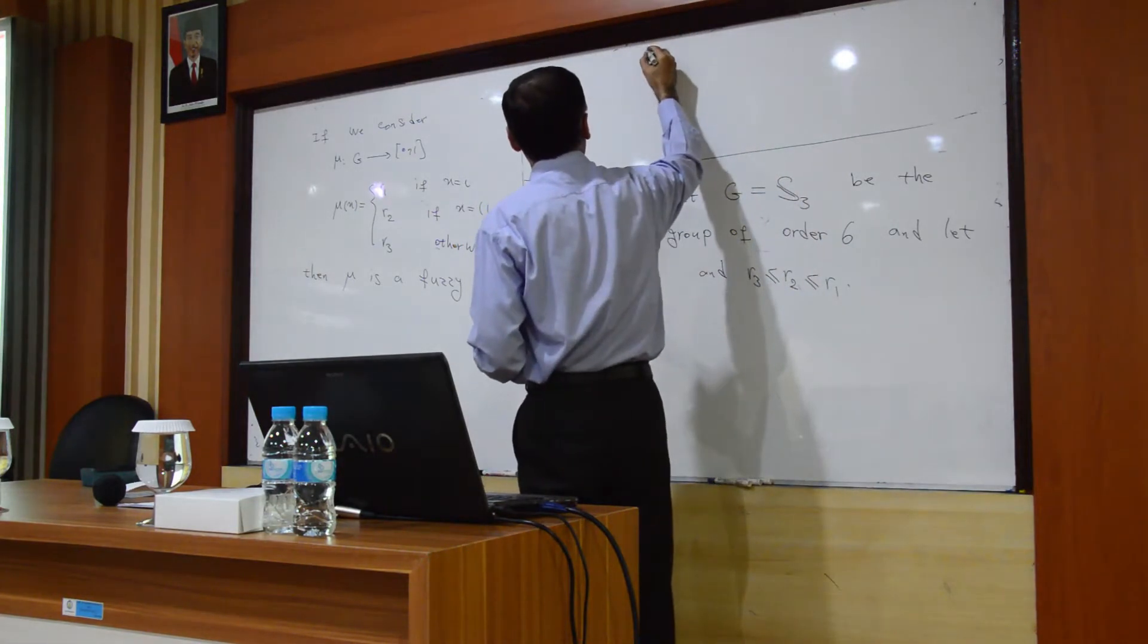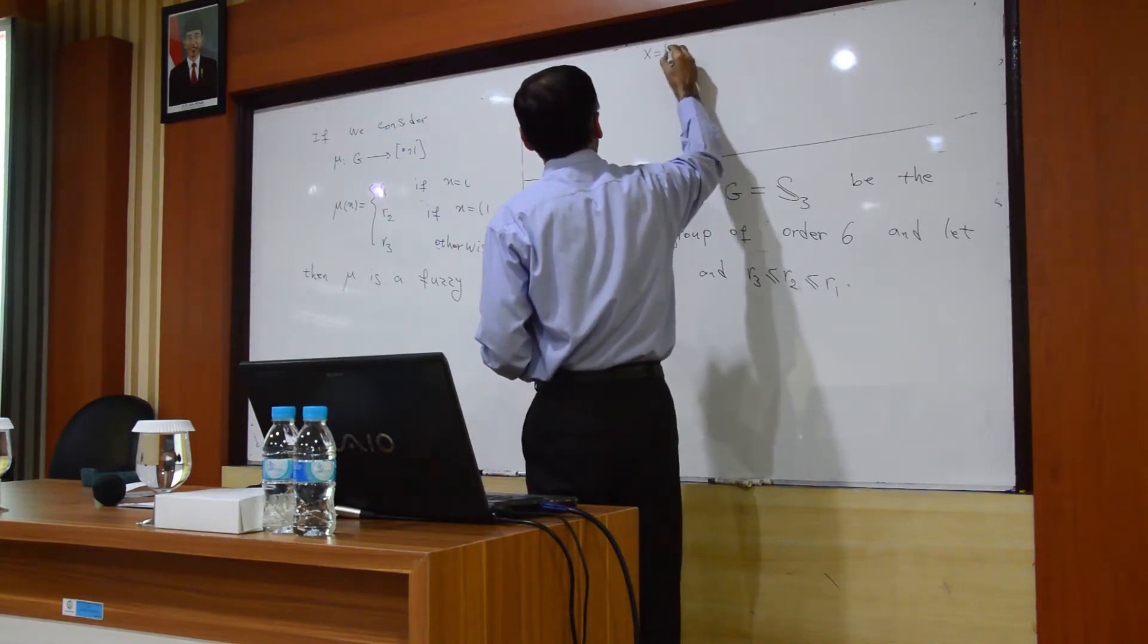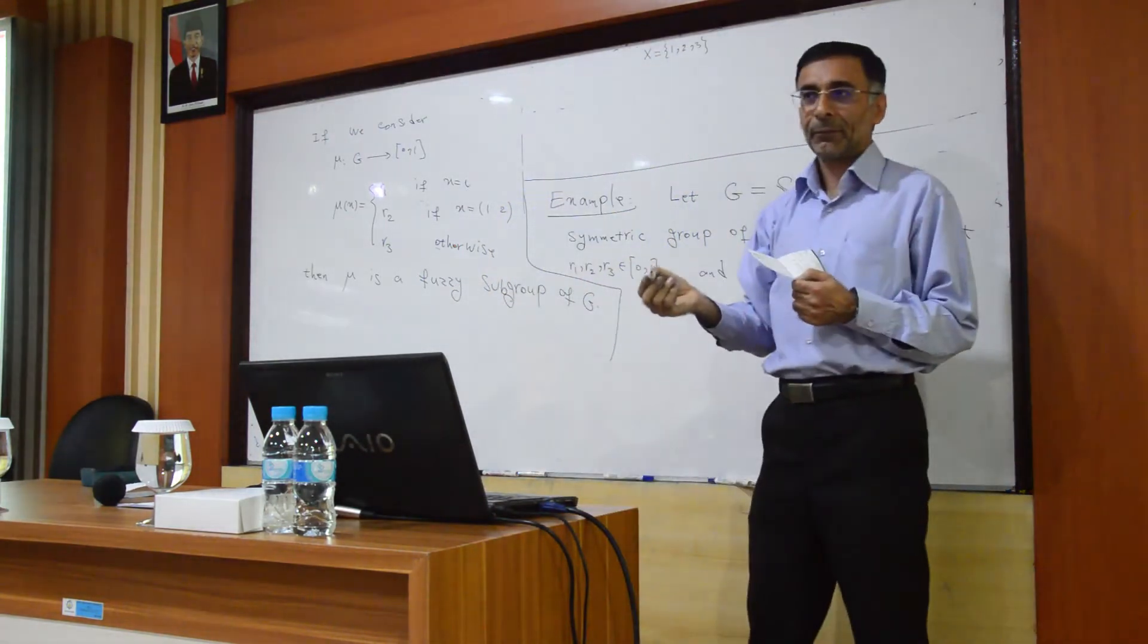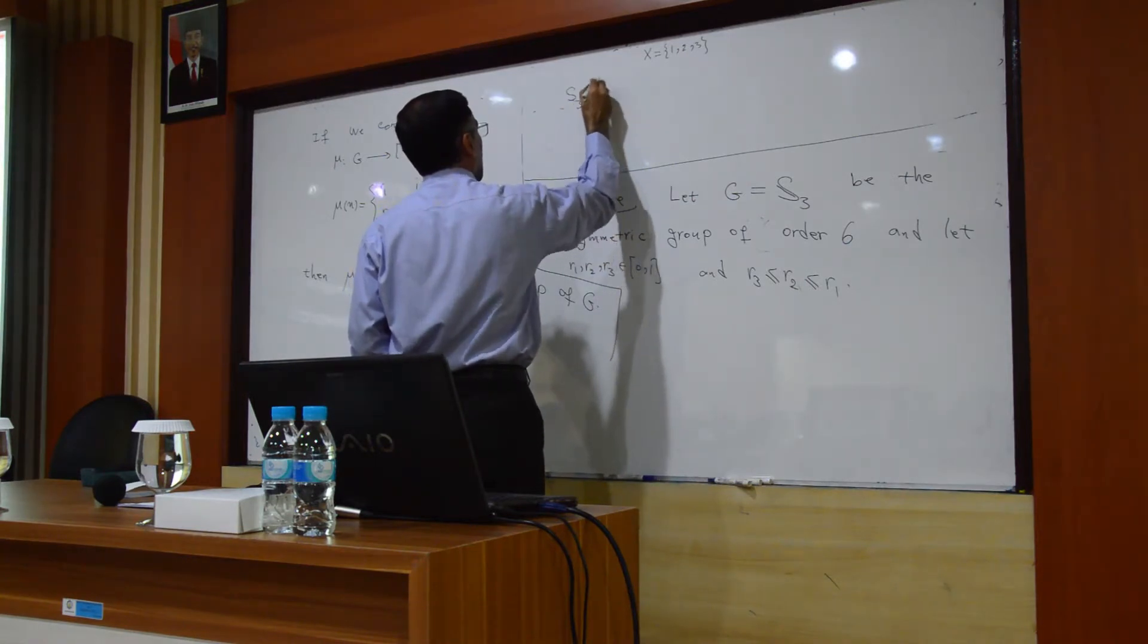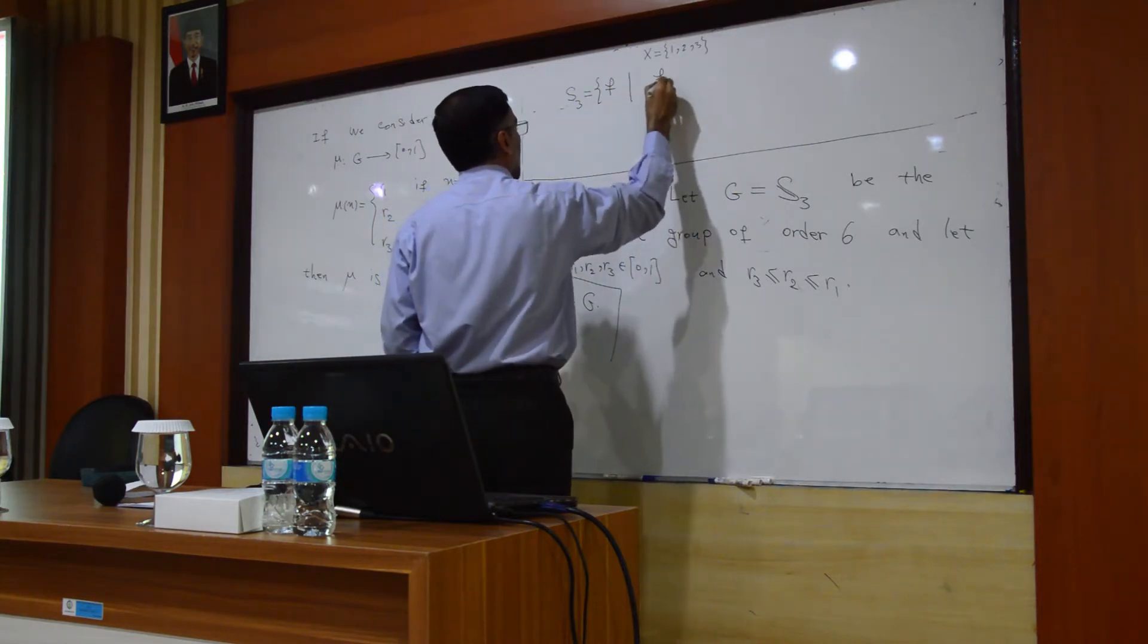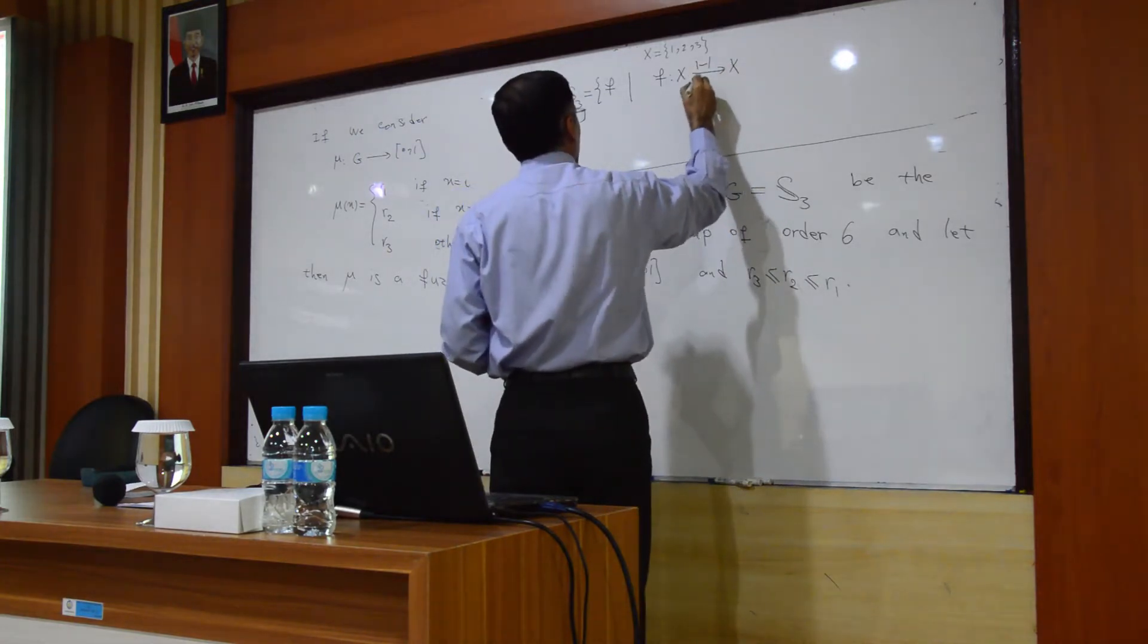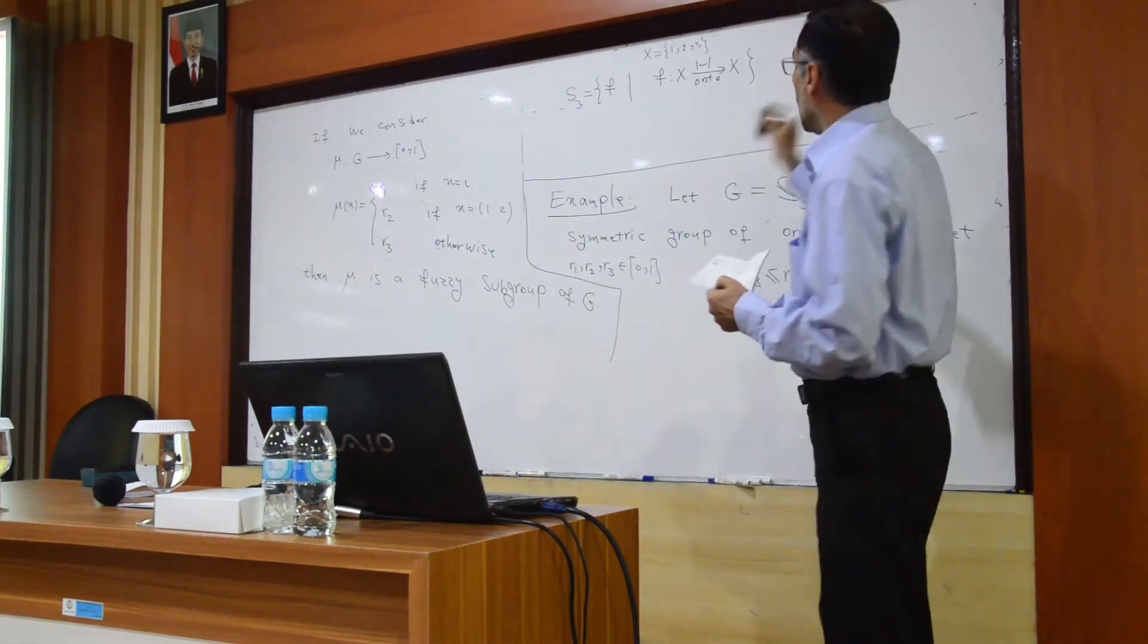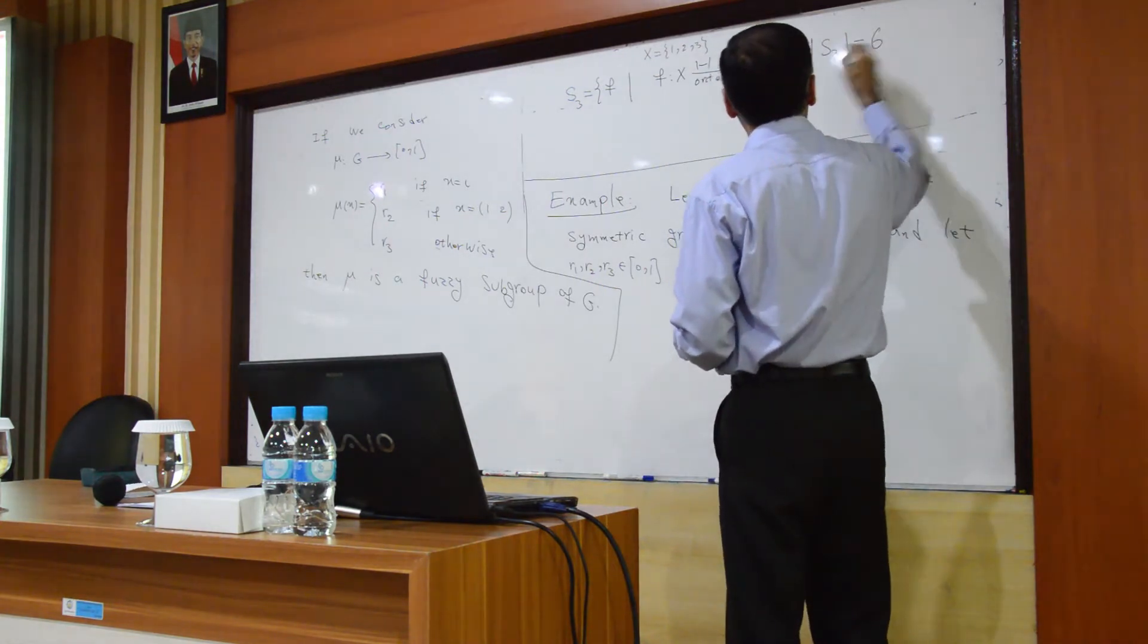Suppose that X be 1, 2, 3, a set with three elements. You consider S3, all of the functions from X to X, that is 1 to 1 and onto. So the cardinality of S3 is six.